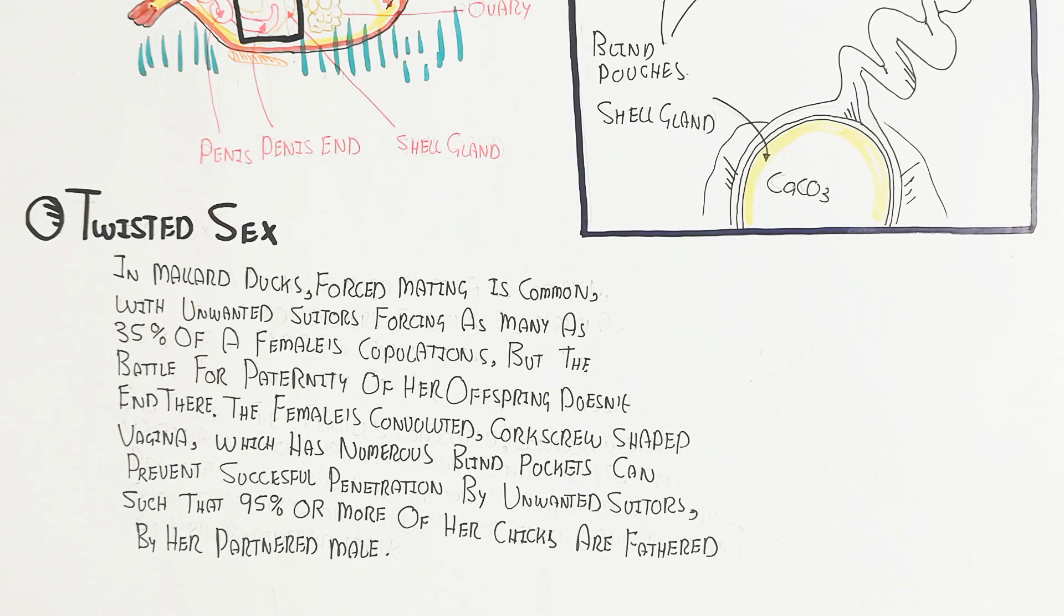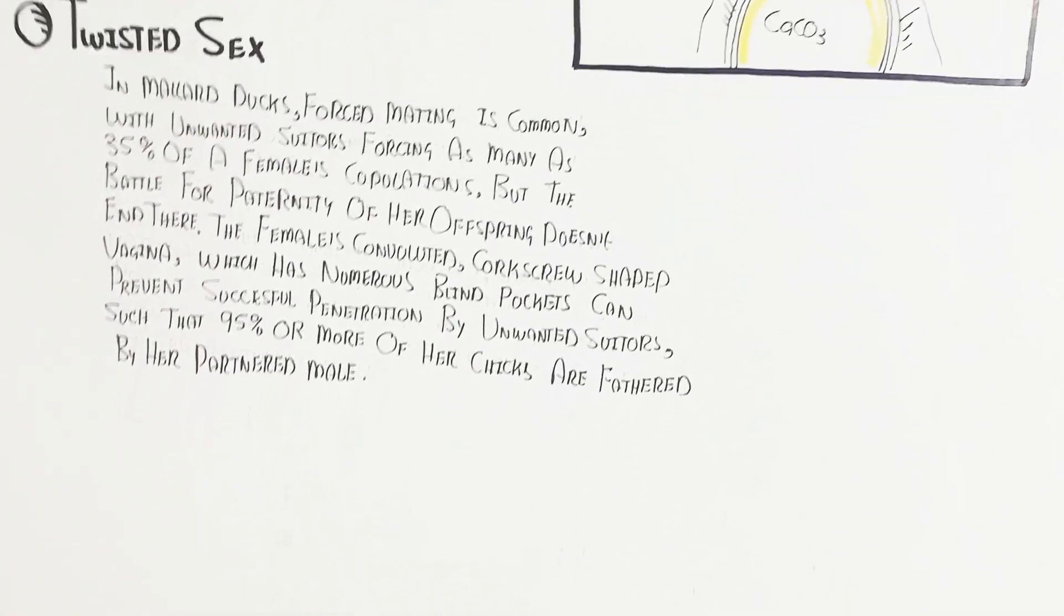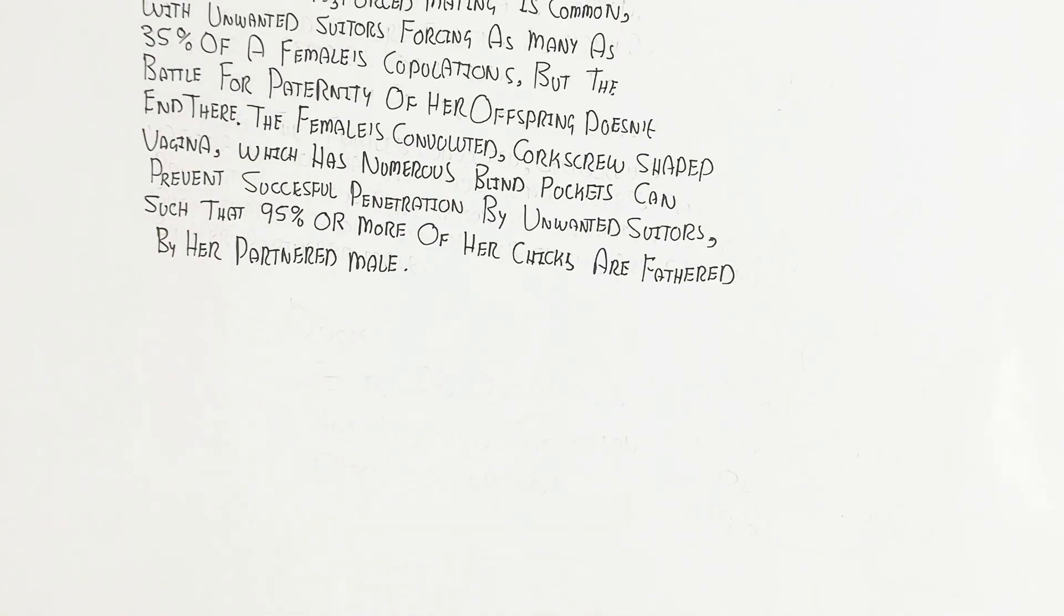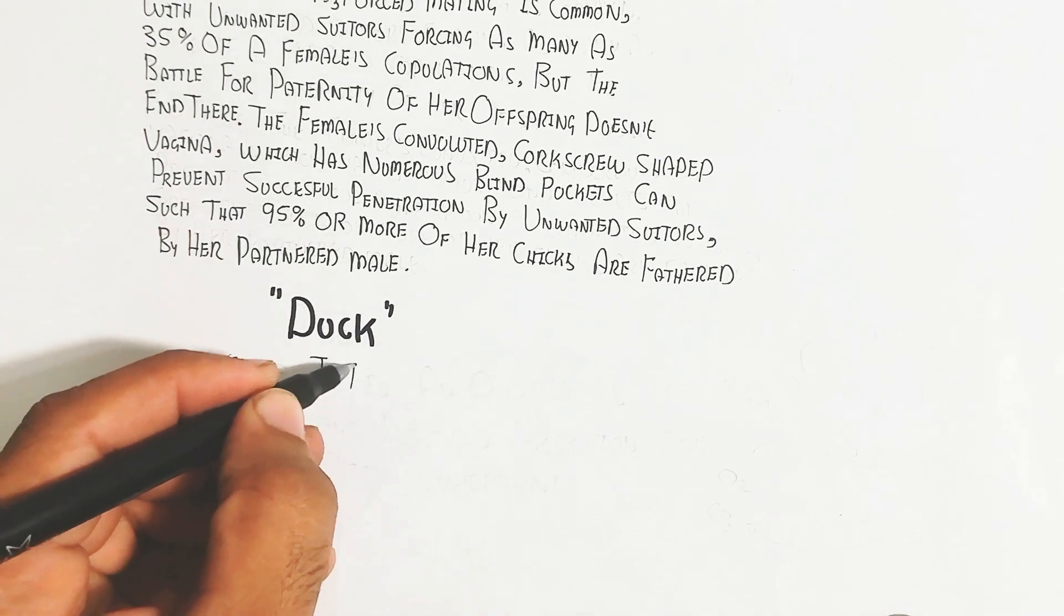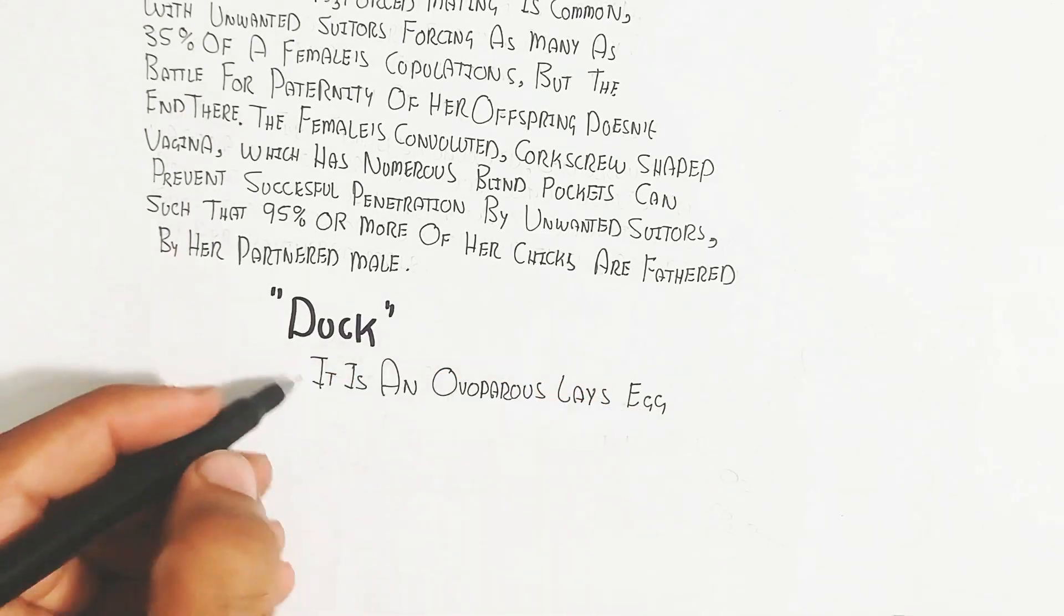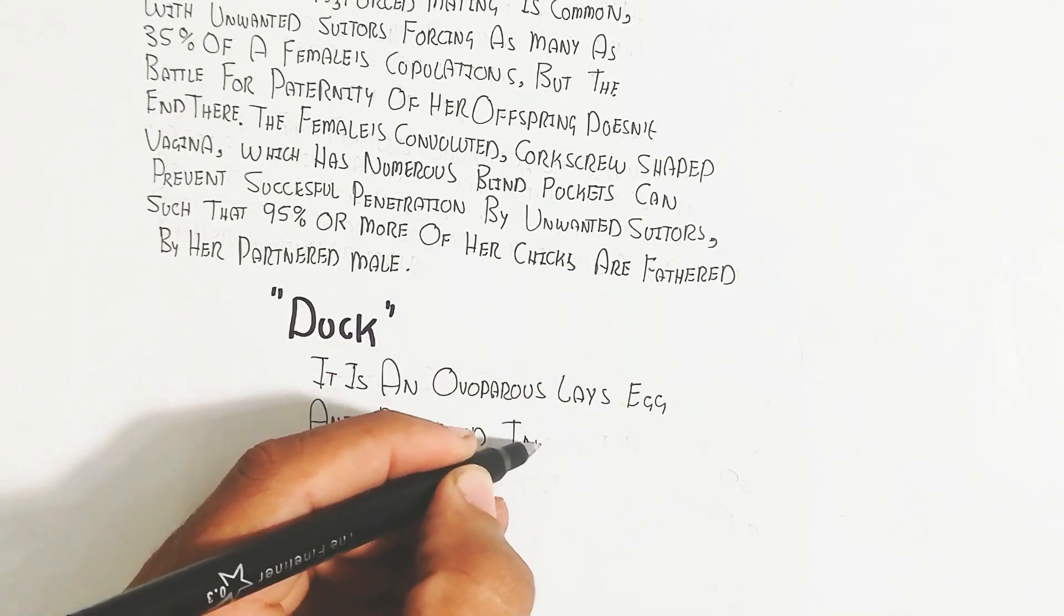The battle for paternity doesn't end there. The female's convoluted corkscrew-shaped vagina has numerous blind pockets and pouches that can prevent successful penetration by unwanted suitors, such that 95% or more of her chicks are fathered by her partner male. The partner male mostly gets the chance for gene transformation into their chick.